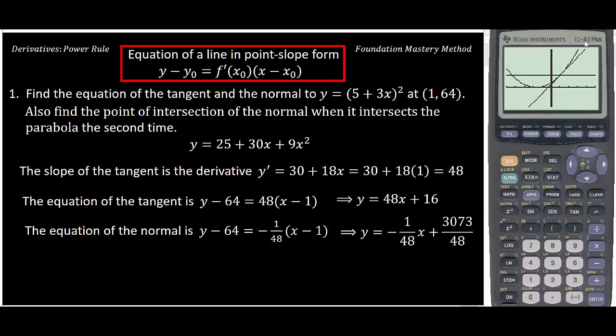You can see this is the graph—we have the parabola, this is our tangent line, and this is our normal. Because of the window it looks like they're not perpendicular, but this line and this line are perpendicular, and the normal is intersecting the graph a second time at this point. We're interested to find this point.